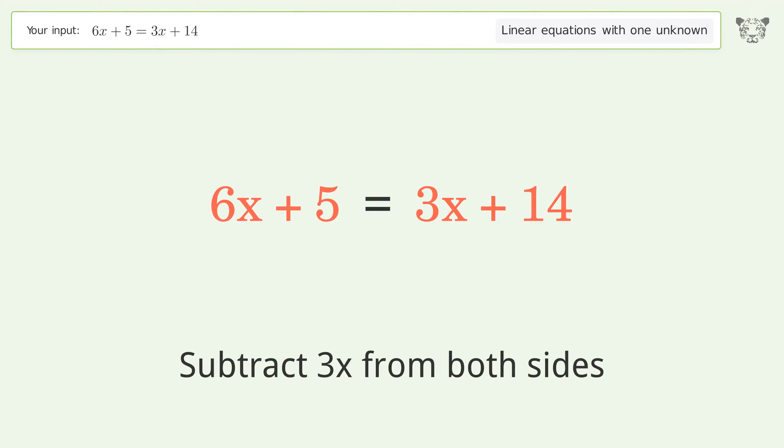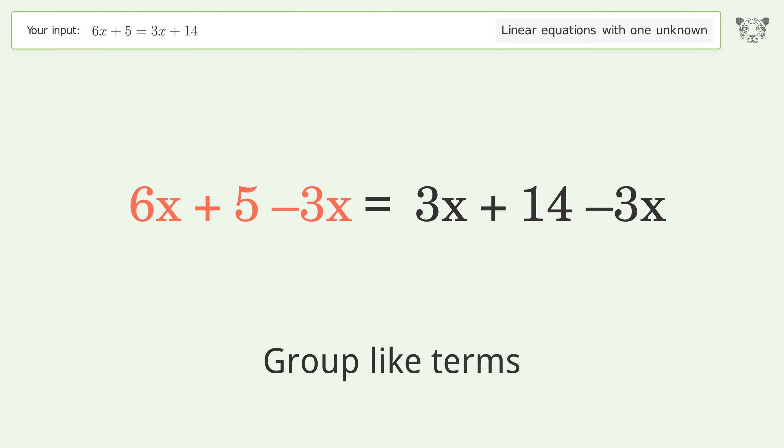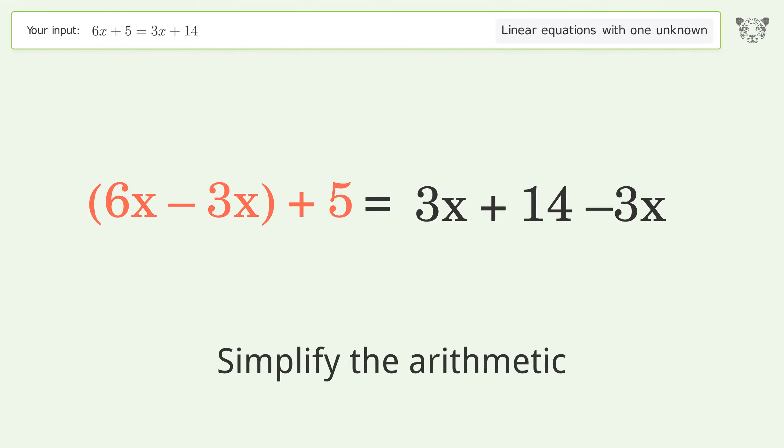Group all x terms on the left side of the equation. Subtract 3x from both sides. Group like terms.